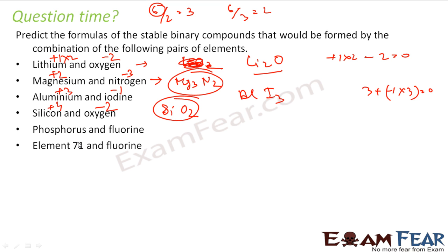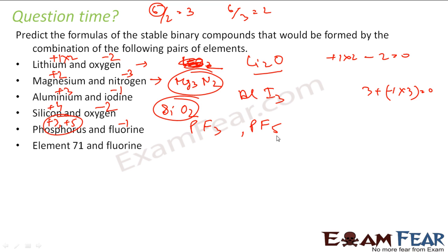For phosphorus and fluorine: phosphorus has two possible oxidation states, plus 3 or plus 5, and fluorine is minus 1. So I can have either PF₃ or PF₅. If I consider plus 3, it is PF₃; if I consider plus 5, it is PF₅.